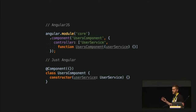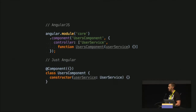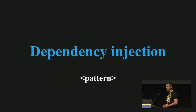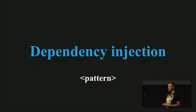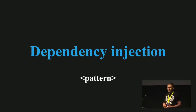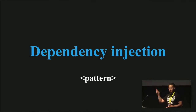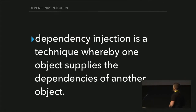You have written something similar to this code, and you were actually using dependency injection. But the question is: you know the definition, you know how it works, you know the implementation of this pattern for the current framework you use. But what is the intent of this pattern? What was it created for? What kind of problems does it solve? Who knows? Lesser. Awesome. Let's speak about it.